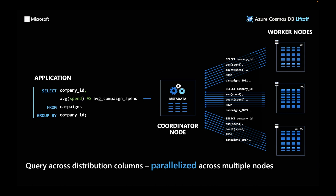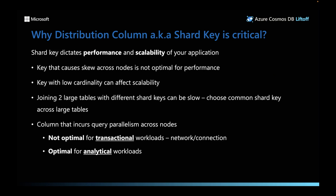Choosing the right distribution column is an important step to effectively use the database. The shard key dictates the performance and scalability of your application because your data and queries are distributed based on it. You don't want to pick a key that causes queries across all nodes, because it won't be optimal for performance. Suppose you pick a column which represents 50% of the data — you'd get bottlenecked on a single node. You don't want to pick a key with low cardinality.